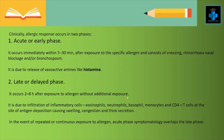Clinically the allergic response occurs in two phases. The first is the acute or early phase, which occurs immediately within 5–30 minutes after exposure to the specific allergen and consists of sneezing, rhinorrhea, nasal blockage and/or bronchospasm. It is due to the release of vasoactive amines like histamines.